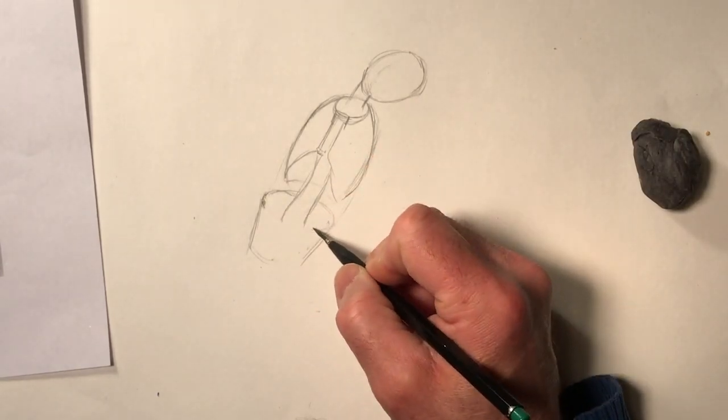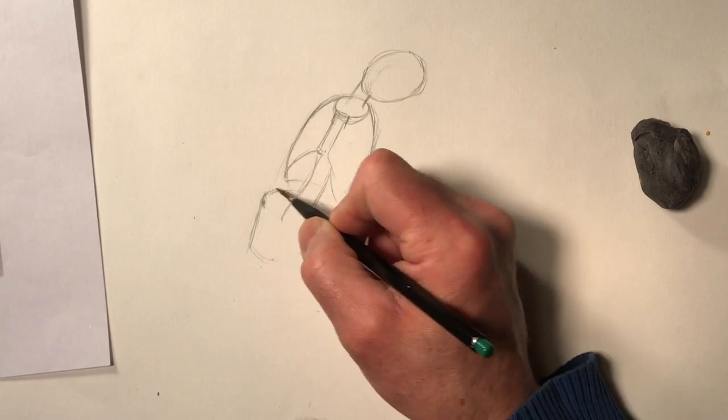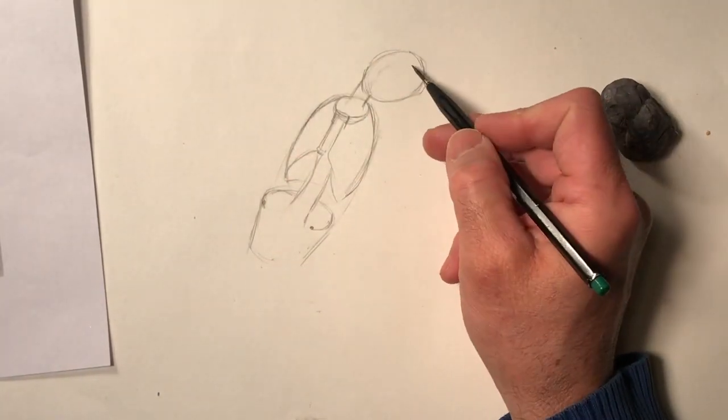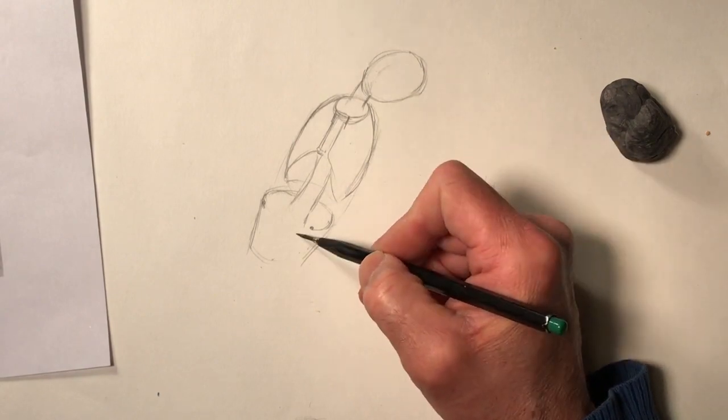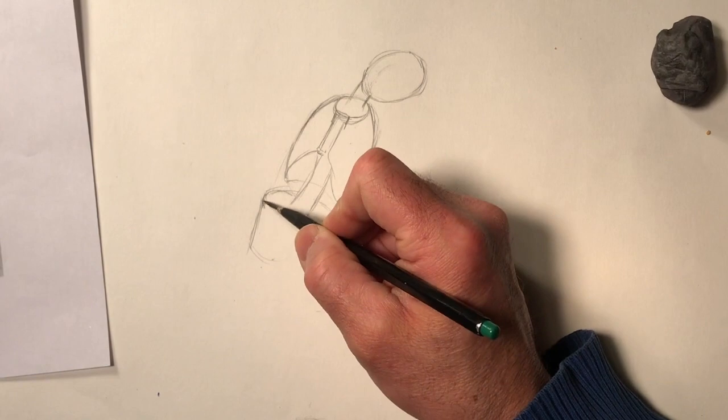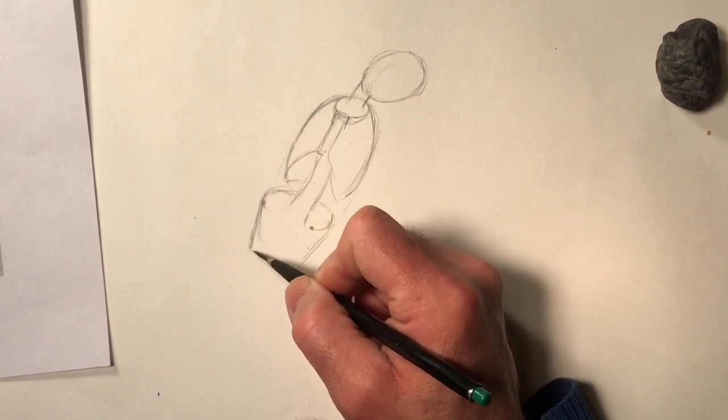So as I draw, I'm going to keep checking the proportional relationship of the various segments. So now I know that head, rib cage, and pelvis are proportioned in relation to each other. I mean, talking about typical proportion.